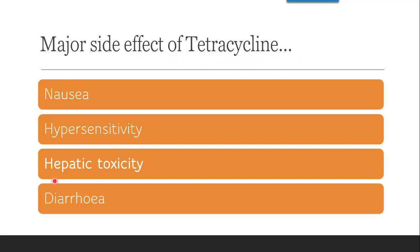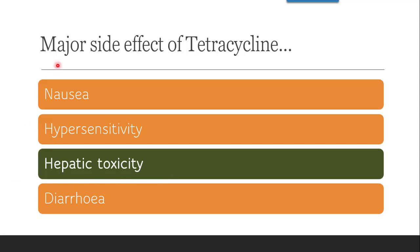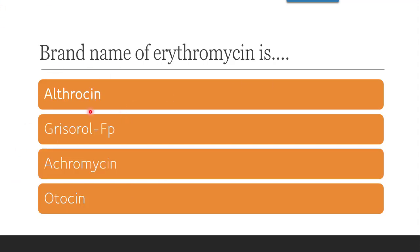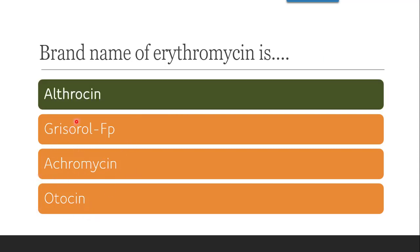The next question is: the major side effect of tetracycline is — nausea, hypersensitivity, hepatic toxicity, or diarrhea. Hypersensitivity is also present, but hepatic toxicity is one of the major side effects of tetracycline. The next question is: the brand name of erythromycin is — Ultracine, Grizerol FP, Acromycin, or Otocine. The correct answer is Ultracine. Erythromycin is a macrolide antibiotic; it interferes with ribosomal protein synthesis and has a bacteriostatic action. Other brands include L-tosine, Erythrosine, Emthrosine, Catrox, etc.